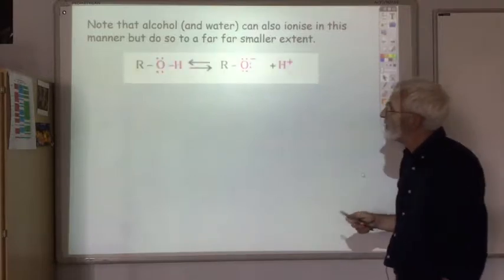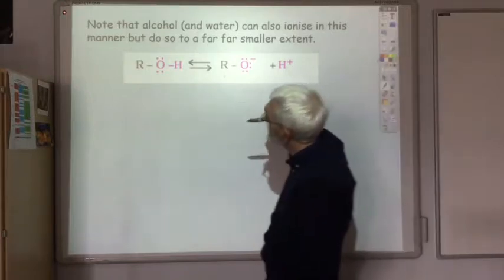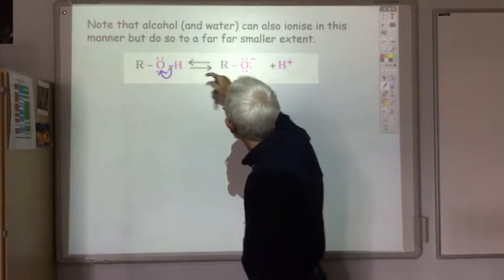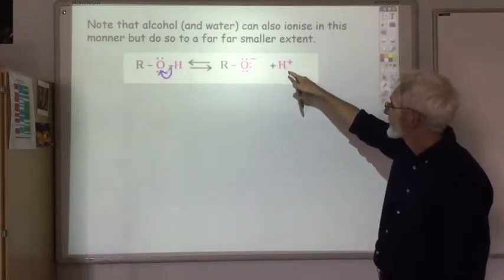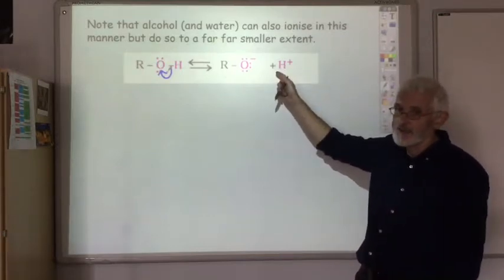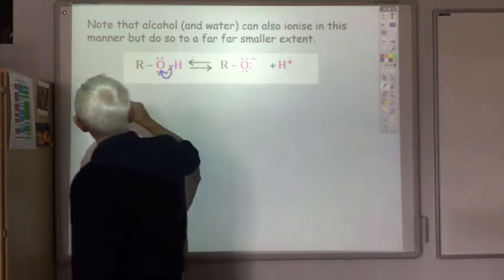So, for an alcohol, just like the carboxylic acid, the OH bond breaks, leaving you with the RO minus ion and your H plus. Why does this happen to a far less extent than in the carboxylic acid? So let's look at the carboxylic acid again.